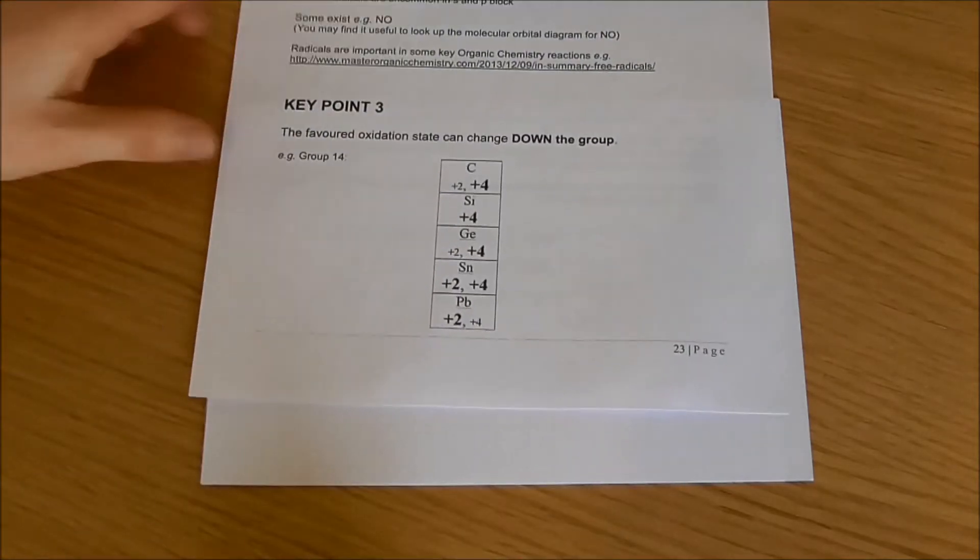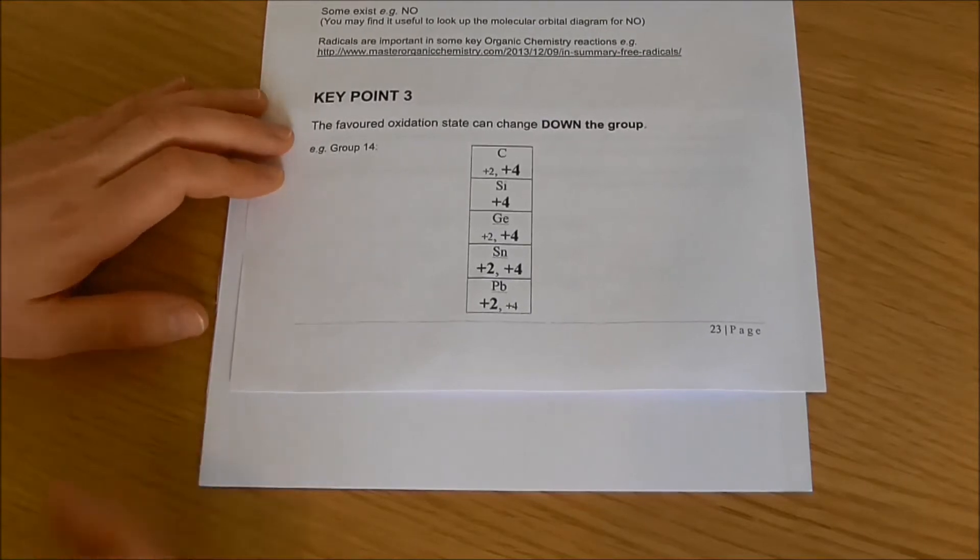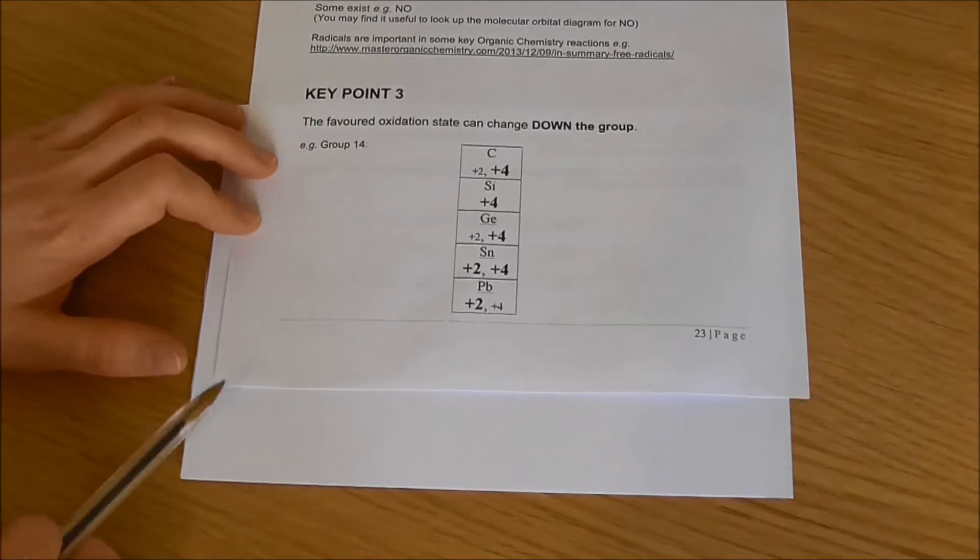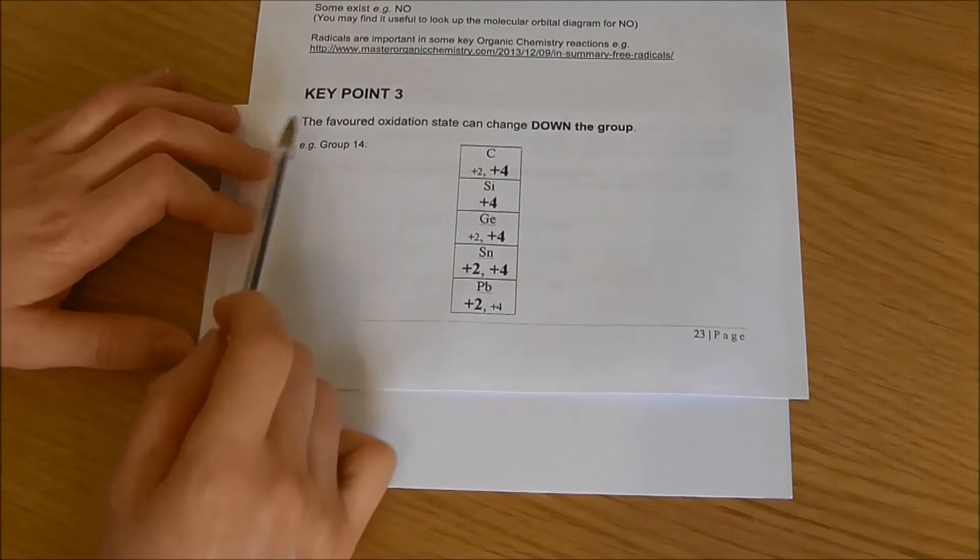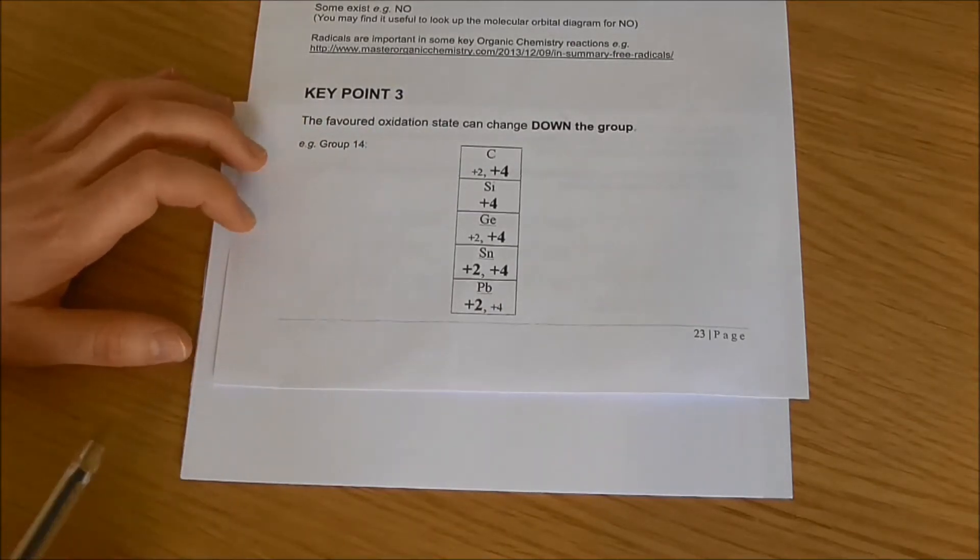This video is an explanation of the inert pair effect. This is an observation that as we go down the groups in the p-block, we can observe in the compounds that the favored oxidation state of elements in that group changes as we go down the group.